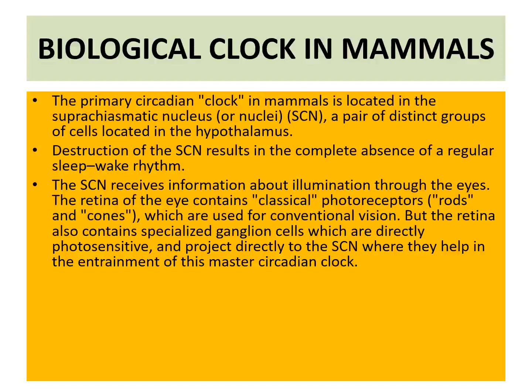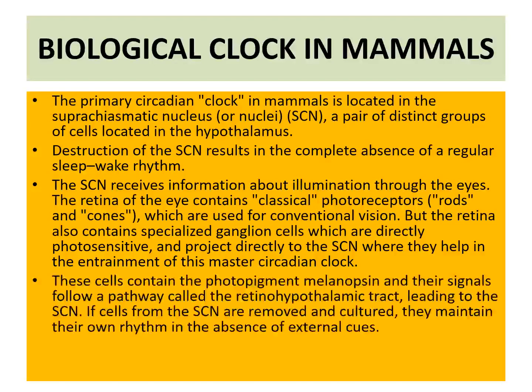These ganglion cells project directly to the SCN, where they help in the entrainment of this master circadian clock. The ganglion cells present in the eye are photosensitive and give information to the SCN — the suprachiasmatic nuclei in the hypothalamus. These cells contain the photopigment melanopsin, and their signals follow the pathway called the retinohypothalamic tract, leading to the SCN.